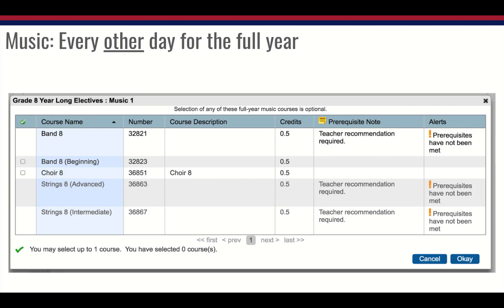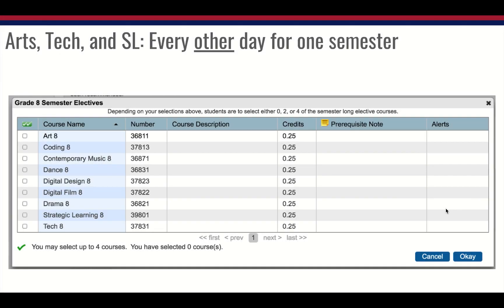For music classes — every other day — there will be two selection screens because you can choose up to two of these, or even the same one twice. You'll be able to select from the available choices on both screens. Finally, the semester electives also run every other day in grade eight. Depending on your previous selections, you'll be prompted to pick either zero, two, or four of these. If you'd like to take one of these twice, please reach out to your counselor to put in that request, as we can't set up the screen to do that, but we'll try our best to make it happen.